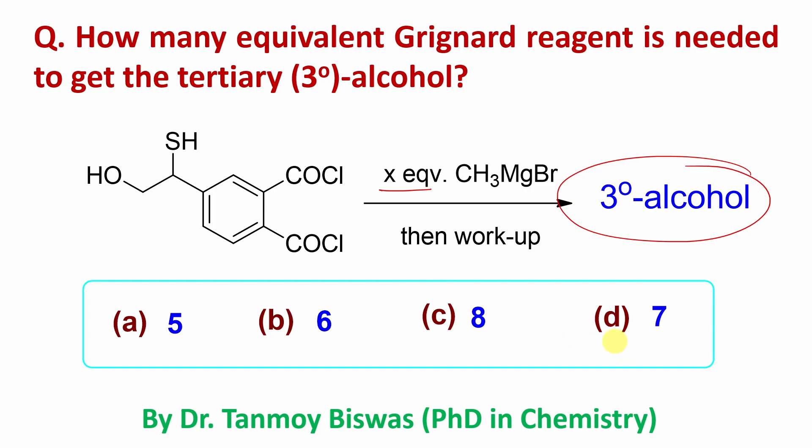So this problem has two parts to it. One is actually the nature or reactivity of the Grignard reagent and second where the reaction will take place, I mean in this molecule.